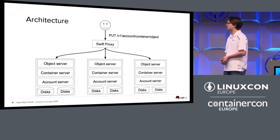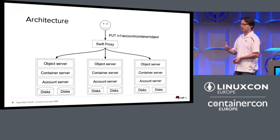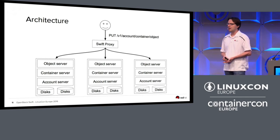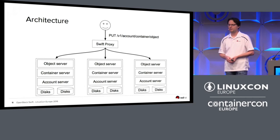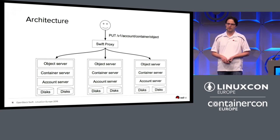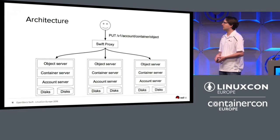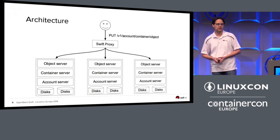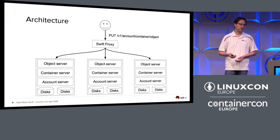There are a few more server types running on storage nodes. The object server handles most of the load, but you also have container servers and account servers which store the listings of objects and containers. Typically the container and account servers store their data on SSDs because it's only a fraction of the total data. The vast amount of storage is stored on cheap disks by the object servers.